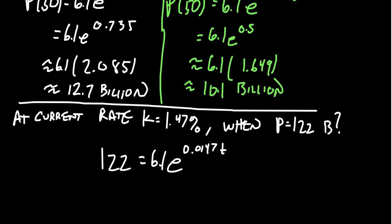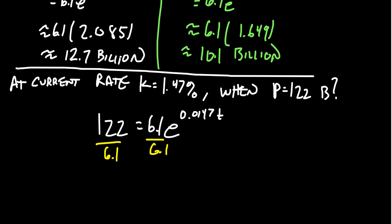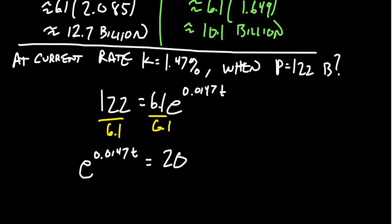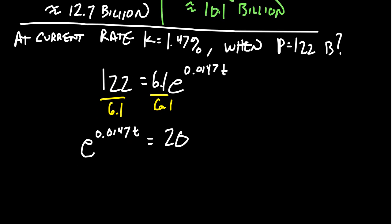So we go about solving this equation right here. Your calculator will be your friend. Divide both sides by 6.1. We end up with E to the 0.0147 T. This is going to equal 122 divided by 6.1. Turns out that actually is 20. Then, how do you get rid of the exponential on the left-hand side? We're just going to take the natural log. The natural exponential is the inverse of the natural log. So we're going to get 0.0147 T is equal to the natural log of 20.